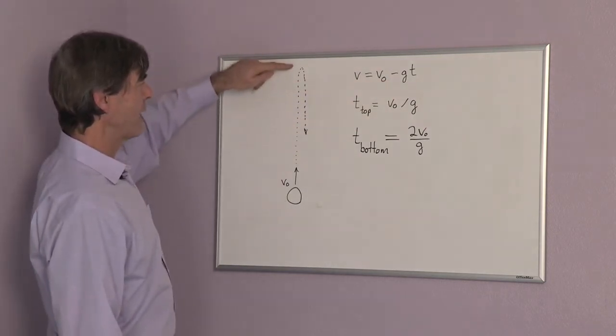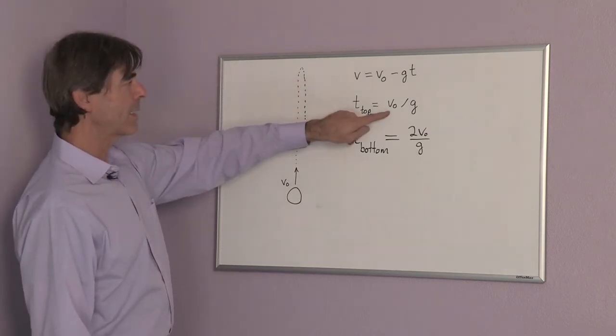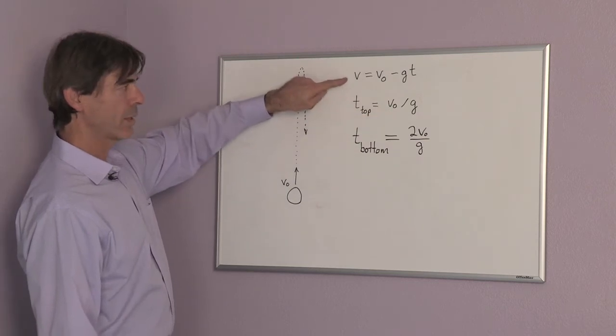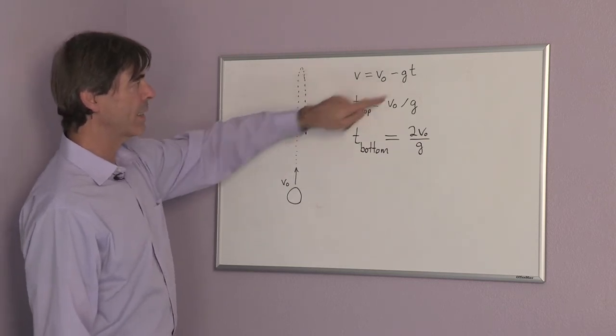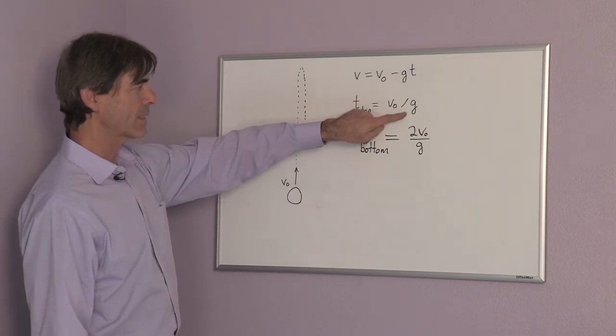It reaches a maximum height, I call this t-top, at a time when the velocity is zero, and so we can solve for the time, and that is t-top equals v0 divided by the acceleration of gravity.